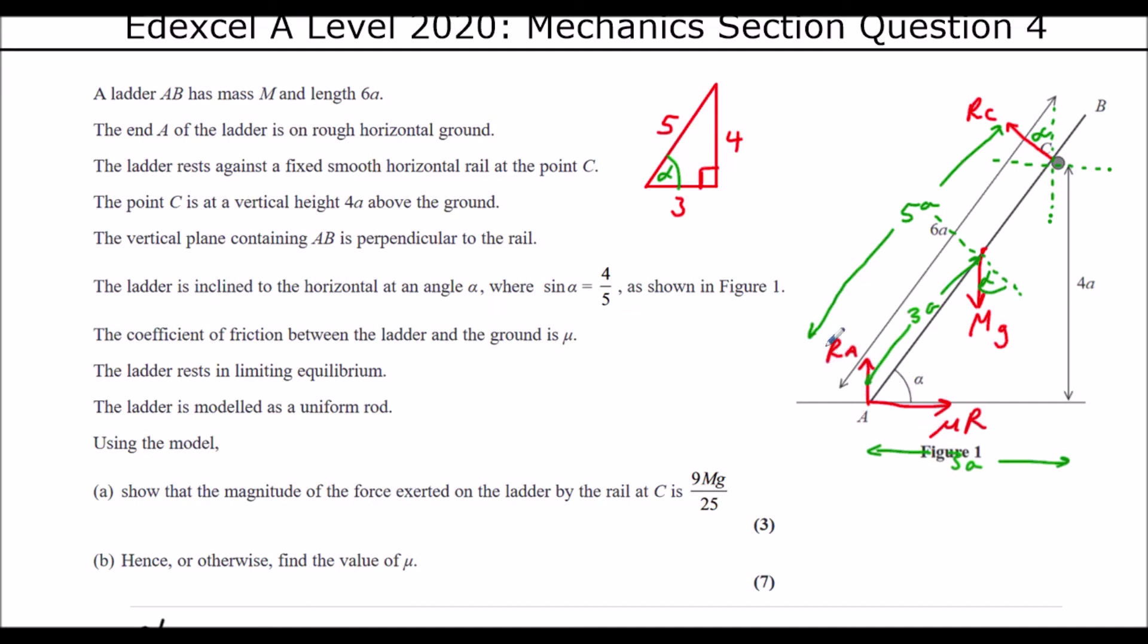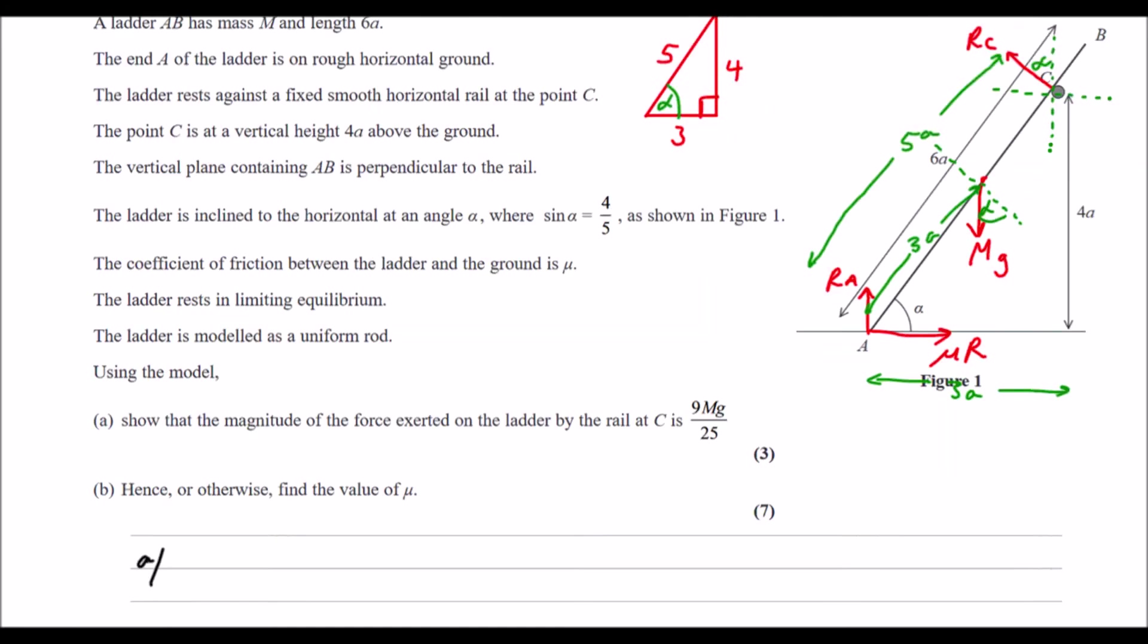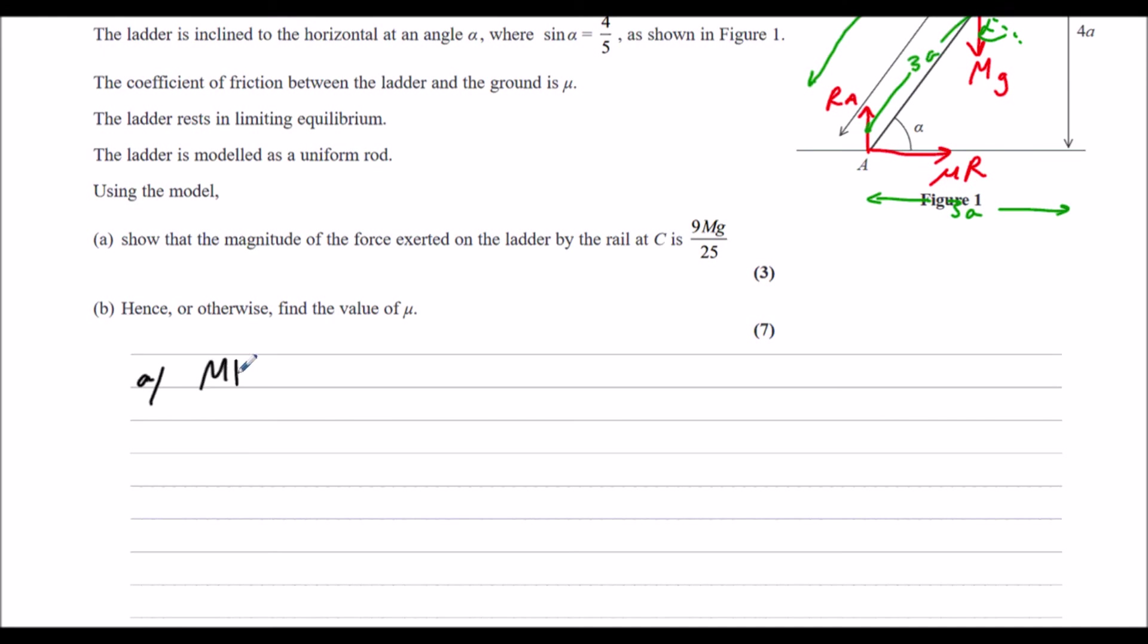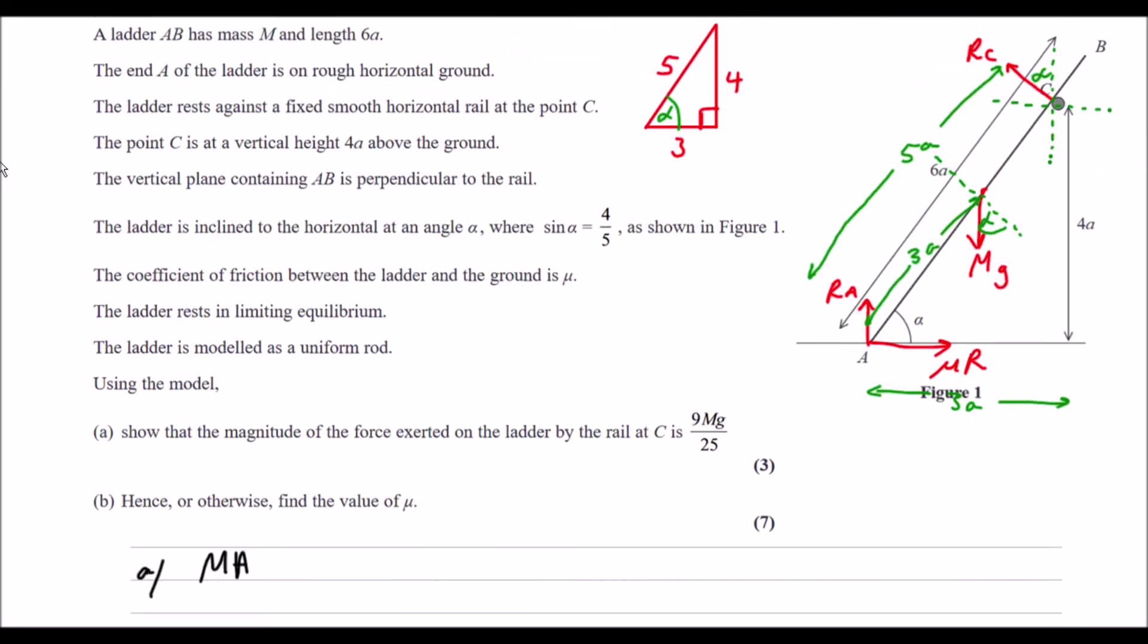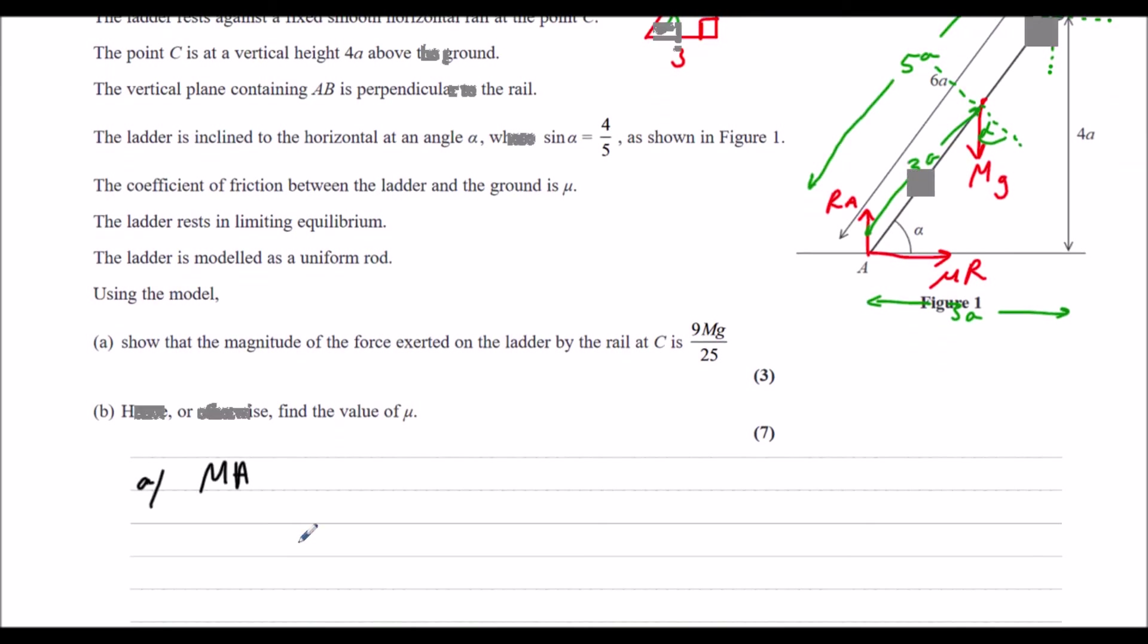For this one, we want to get rid of the reaction A and friction. To do that, we'll take moments about A. So if we take moments about A, that's clockwise moments equal anti-clockwise moments. And for each, it's the distance times the perpendicular force. So clockwise, we have three A is the distance.